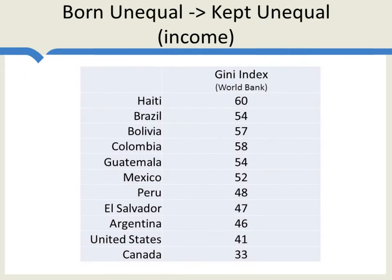Even today, hundreds of years after the colonial period, we still see a massive level of income inequality in these countries. The Gini index — a measure of inequality — is at 60% in Haiti, 54% in Brazil, 57% in Bolivia, 58% in Colombia, 54% in Guatemala. These are some of the most unequal countries in the world. The United States, actually one of the most unequal developed countries, is at 41%. Canada is down at 33%.